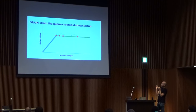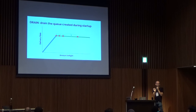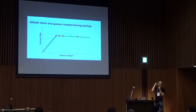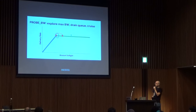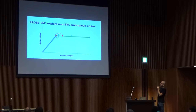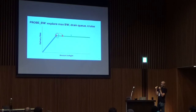Drain mode's job is to drain the queue inevitably created by the startup phase. When drain mode starts there's some amount of queue, so drain uses a pacing rate below the estimated bottleneck bandwidth so that the amount of data in flight gradually decreases. Once in-flight has decreased to the estimated BDP — the pipe is full but the queue is very small — we proceed to the next state: probe BW. Its main job is to explore bandwidth to see how much more is available, then drain any queue created by that, then cruise with high utilization and low queue.